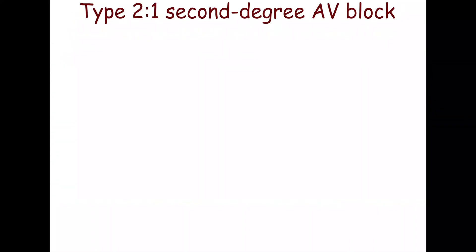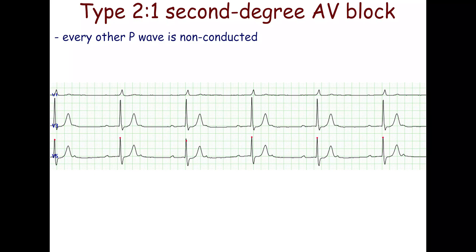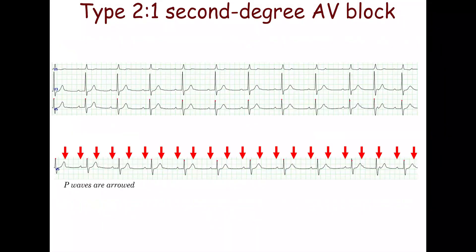The 2 to 1 type is a distinct type of second-degree atrioventricular block in which every other P wave is non-conducted. Sometimes the P wave may be completely superimposed on the T wave of the previous beat and completely invisible. This ECG may be misinterpreted as sinus bradycardia; however, a careful examination of the long strip may provide a clue to the diagnosis.